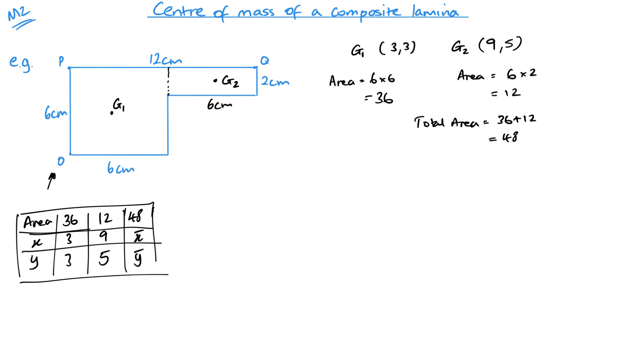If you want, you can put area and the coordinates. Setting this up, we've got an area of 36 and its position is 3, 3. An area of 12 and its position is 9, 5. And then the total area of 48 and its position is X bar and Y bar.